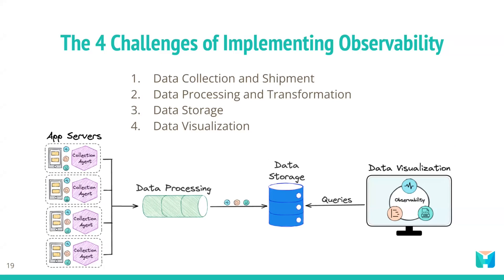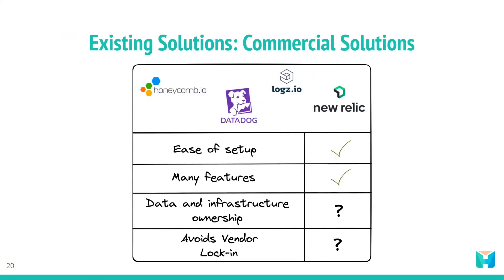Several companies offer various observability tools to satisfy most developers' needs. One of the benefits is that they are typically easy to set up and feature-rich, including infrastructure monitoring, network monitoring, and error tracking. However, some commercial solutions may not be a good fit for teams concerned about data and infrastructure ownership. Teams working with sensitive data or in highly regulated industries may be wary of third-party solutions due to concerns about data privacy, security, and compliance. These teams may prefer to keep complete control over their data and infrastructure, including the ability to choose where and how it is stored and processed.